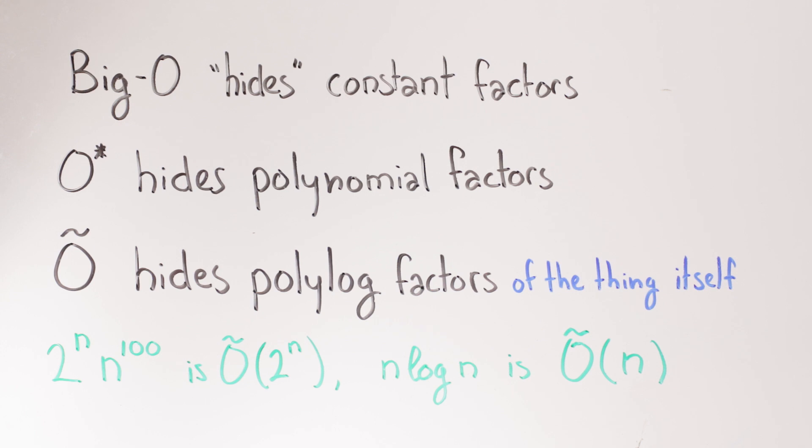For sorting, we might care about that log factor, but often we don't really worry about some messy polylog terms like log squared over log log n or whatever, and that's where you tend to see O tilde.